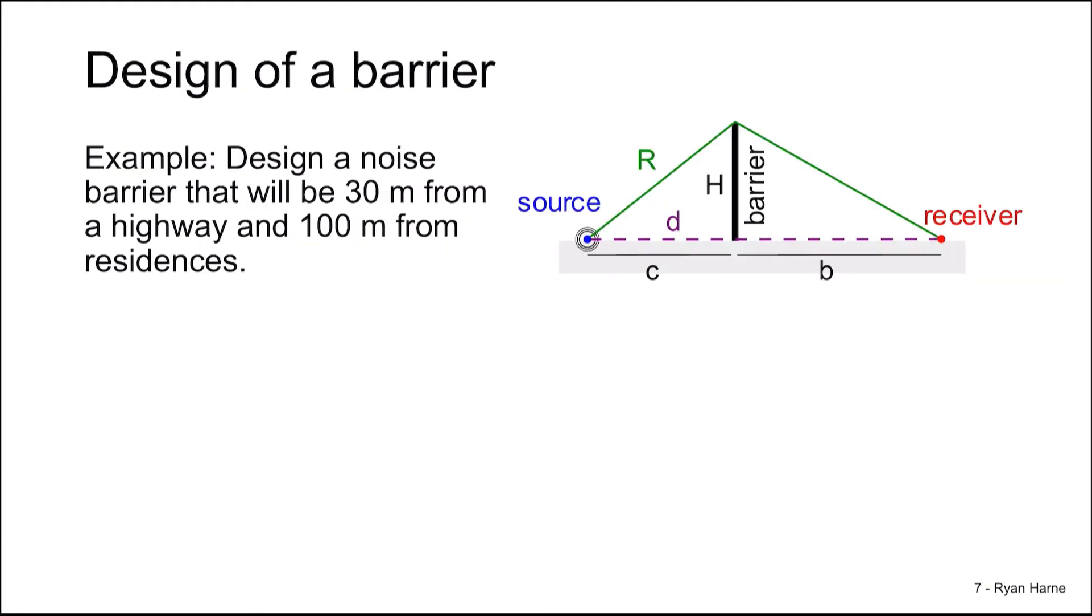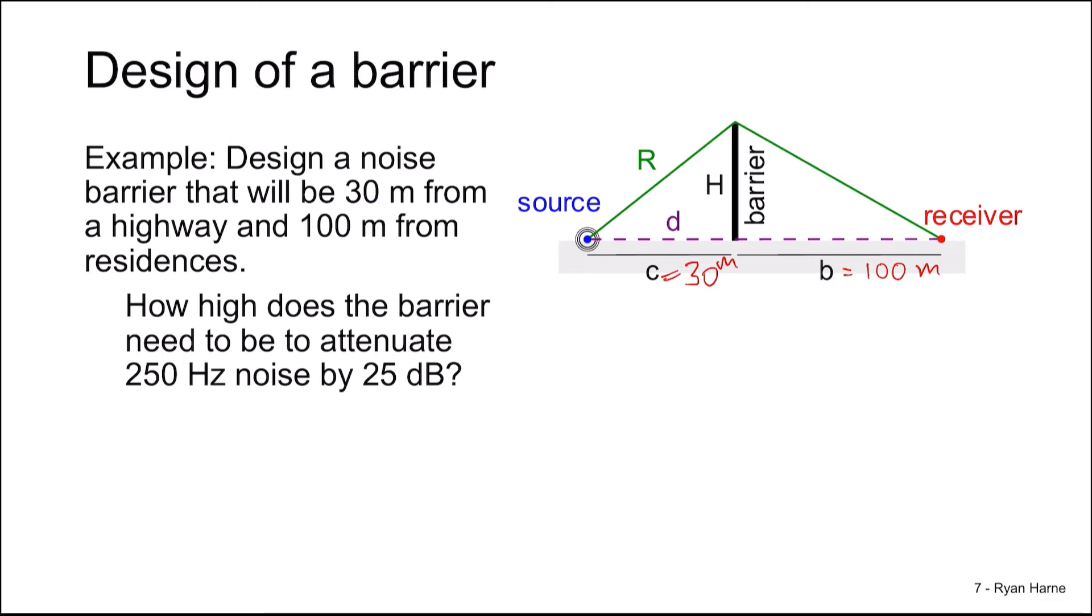Let's consider an example to wrap our head around these design characteristics of barriers. So here we have a noise source. It's a highway. It's 30 meters from a barrier that we will design. There are residences from the barrier gapped off by about 100 meters. How high does this barrier need to be, parameter H, in order to attenuate 250 hertz noise by 25 decibels?